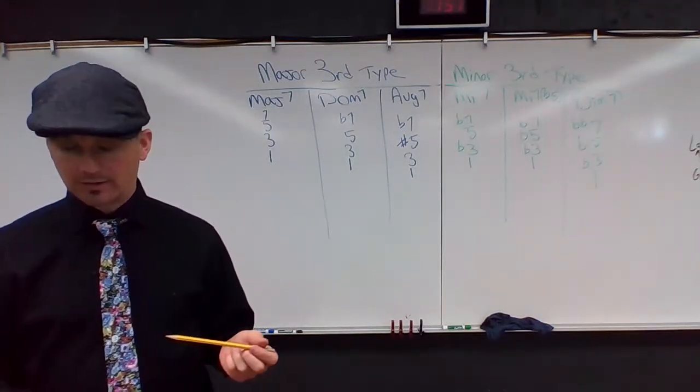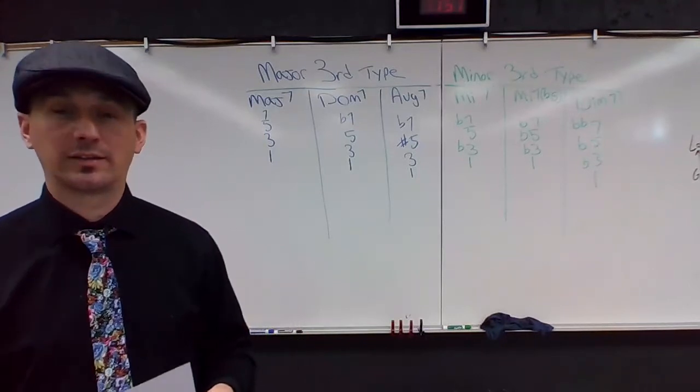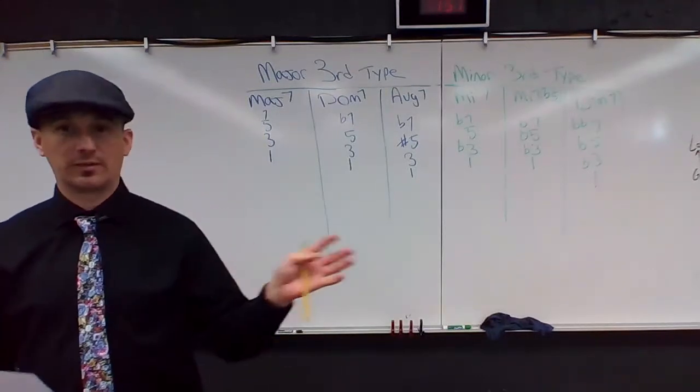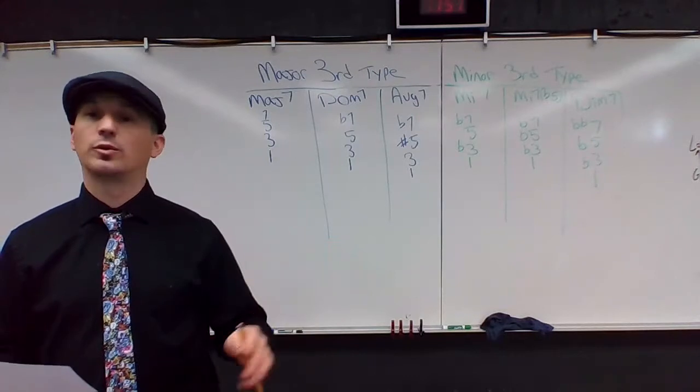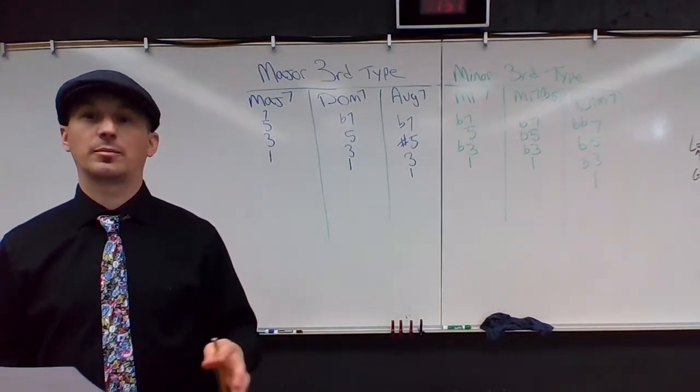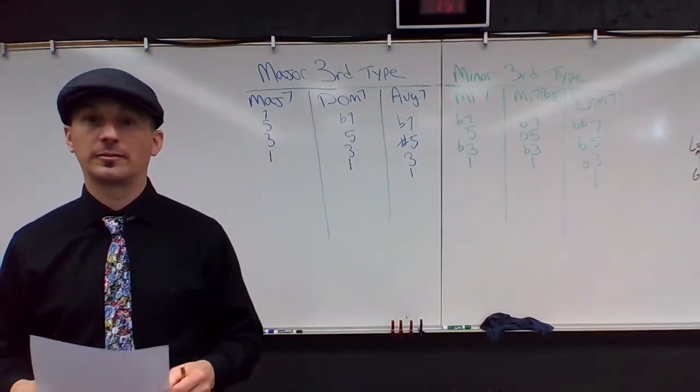And finally, the diatonic triads or the triads that are in a key. So you've got to know all seven of those in order. What's the two chord in the key of A flat? B flat minor. You've got to know that quickly.